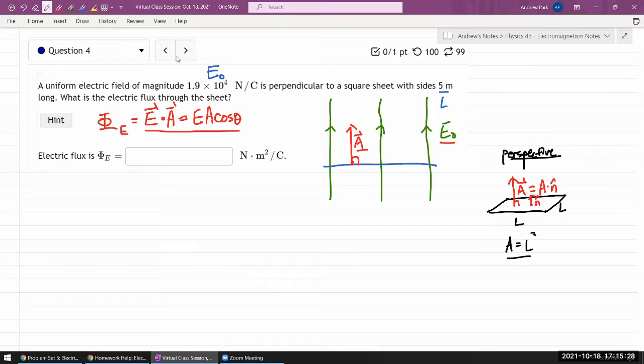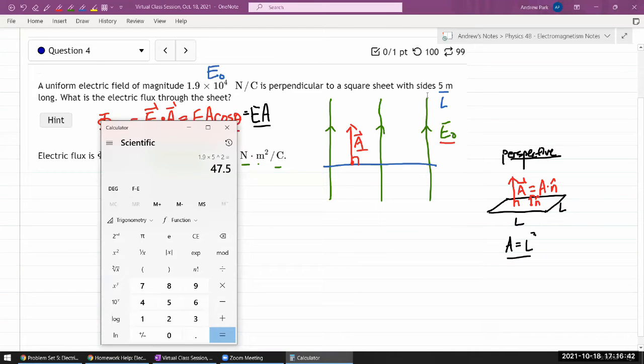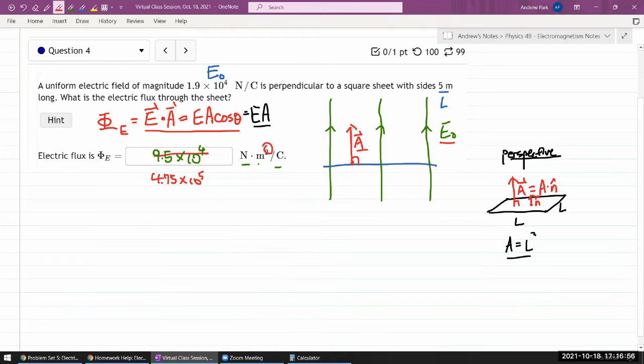Cosine of zero is one, so this really simplifies down to the electric field times the area. So, the answer is super simple here. 1.9 times 5 squared. I'm going to do that in calculator. Okay, so it's going to be 4.75 times 10 to the 5 meters squared. I forgot about that. Let me enter that.